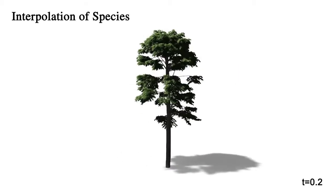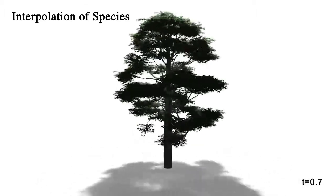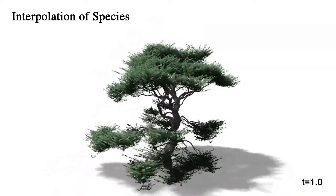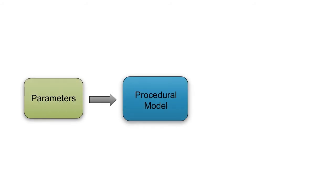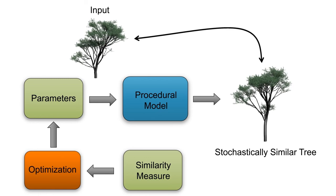It is easy to interpolate the tree models via their defining parameters. However, it is extremely difficult to manually select parameter values that would produce trees similar to the input. The aim of our approach is to automatically find a set of parameters that would generate stochastically similar output trees for a given input. We achieve this through optimisation, traversing the parameter space and maximising a similarity measure between the input tree and the trees generated by the developmental model.